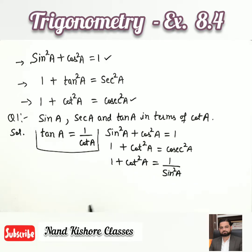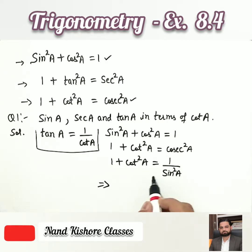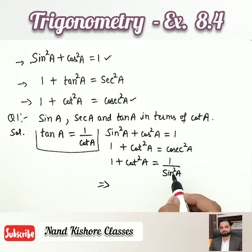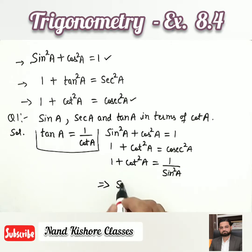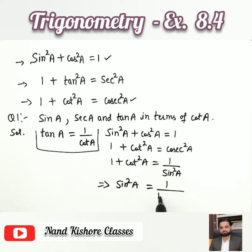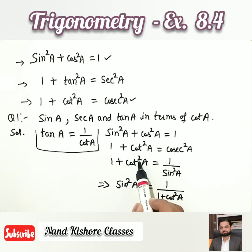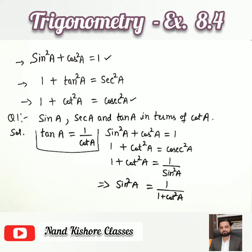Now I can do cross multiplication or take the reciprocal on both sides. If I take the reciprocal: the reciprocal of 1/sin²A is sin²A, and 1 + cot²A becomes 1/(1 + cot²A). By cross multiplication, sin²A moves to the numerator and (1 + cot²A) becomes the denominator.